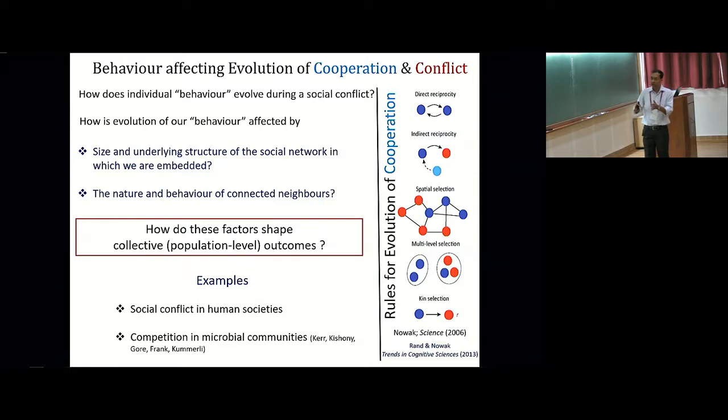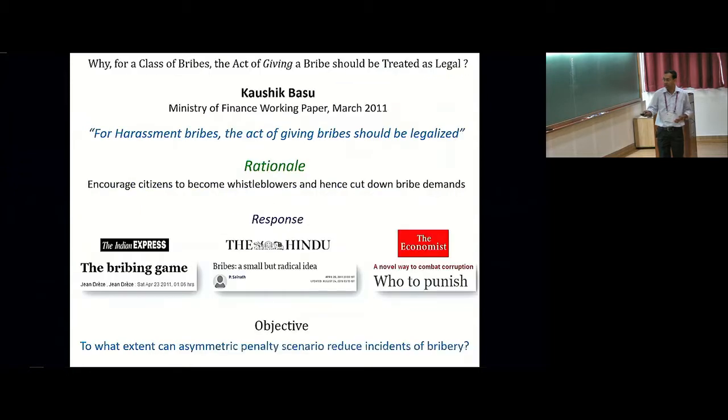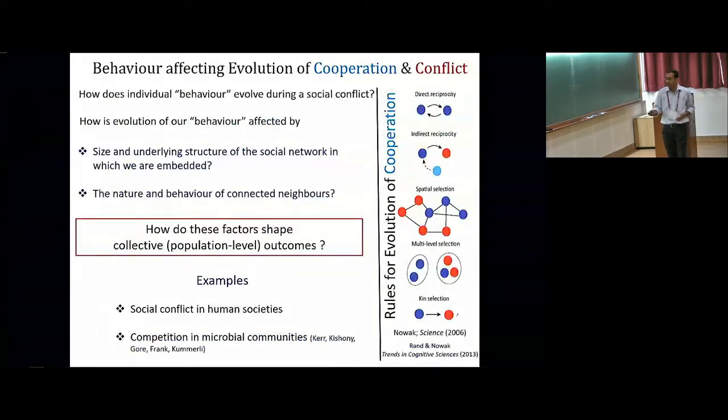In today's talk, I'm going to focus on two examples of social conflict in human societies, although I should mention that some of the models of evolution of cooperation have been tested through very clever, interesting experiments done by various groups using communities of microbial organisms, including bacteria and yeast. But for today's talk, I'm going to focus on two examples of social conflict in human societies.